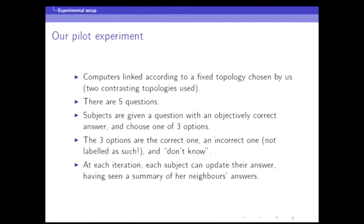First everyone answers, then when they're all done they get some feedback about their neighbors and have the opportunity to update. They had 10 iterations of each question. We did this in several different sittings because of the size of the room and ended up with something over 50 participants — five questions, 10 iterations each — so there's a reasonable amount of data, though you could always like more.